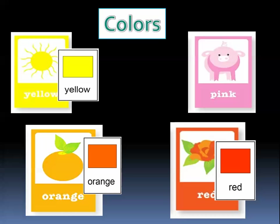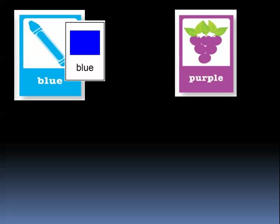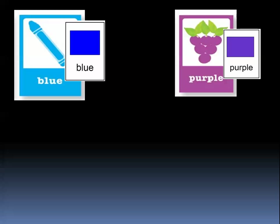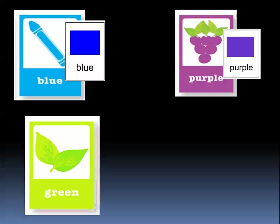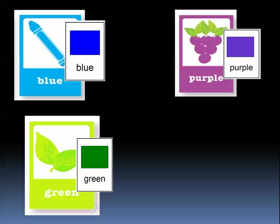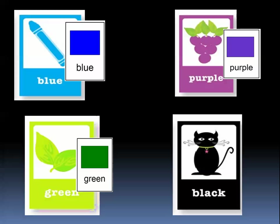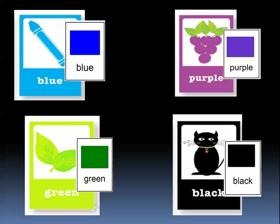Do we have other colors? Let's see. We have the color blue — this crayon is blue, like the sky. The sky is blue, the sea is blue. And the grapes — I like grapes — the grapes color is purple. And the leaves of the trees are green. And this cat is black.